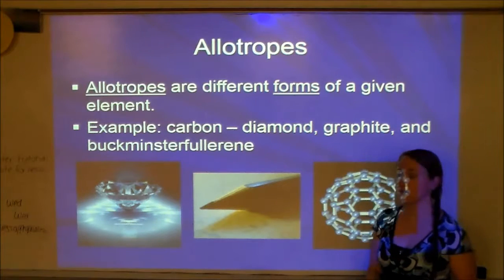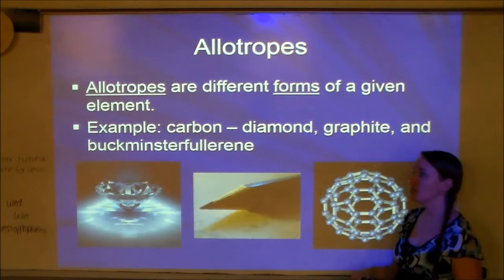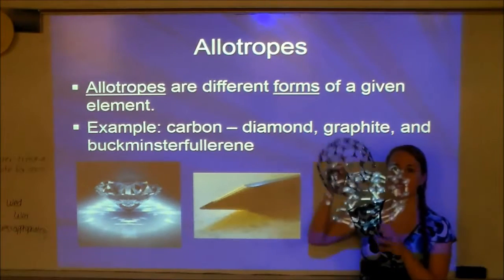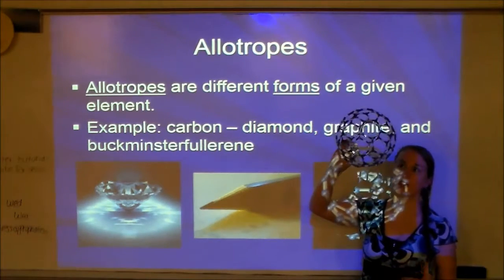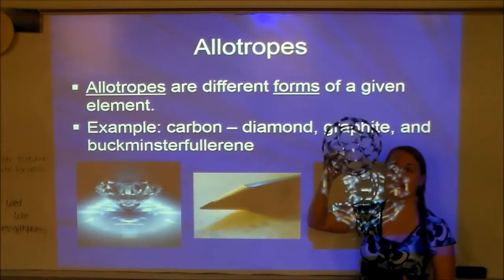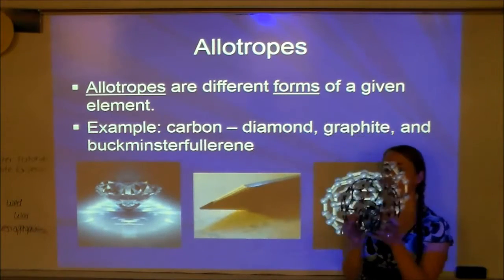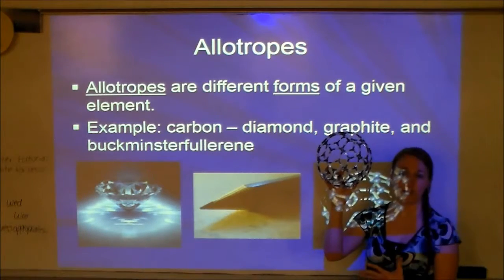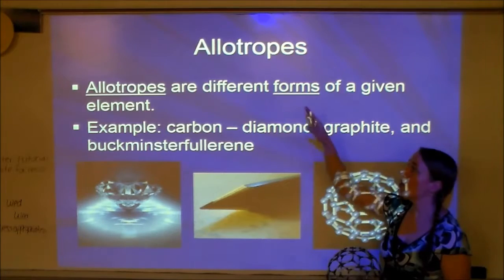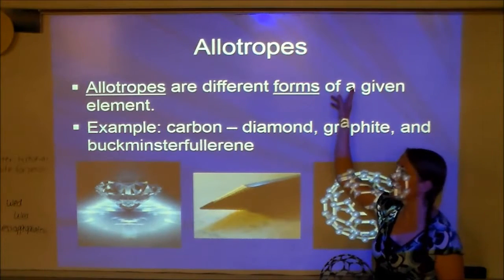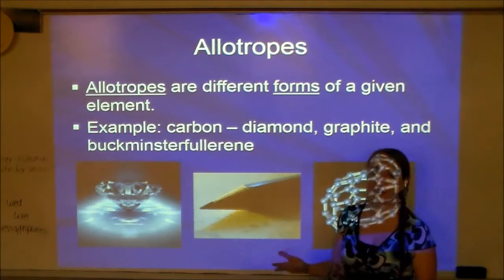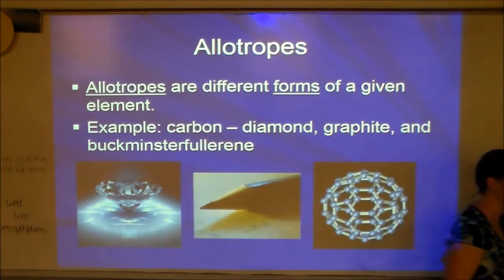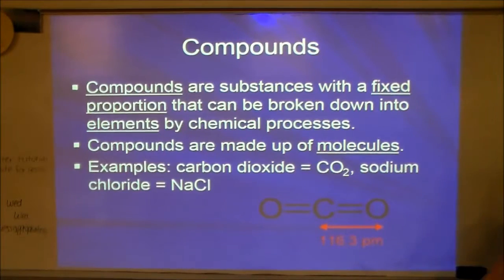Buckminster fullerene was first discovered in ashes and soot. When you burn something, you're left with a lot of carbon. It is a spherical molecule made of alternating six- and five-membered rings. It is a real molecule and is also made only of carbon. So all three allotropes are the same element — all carbon — but they're different forms with different bonding. I'll show you those structures in class.